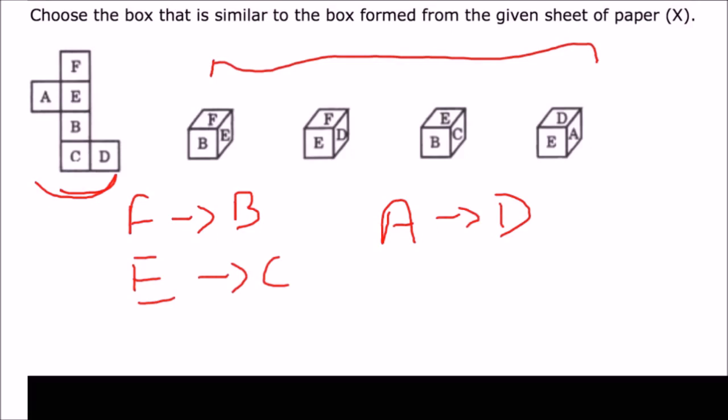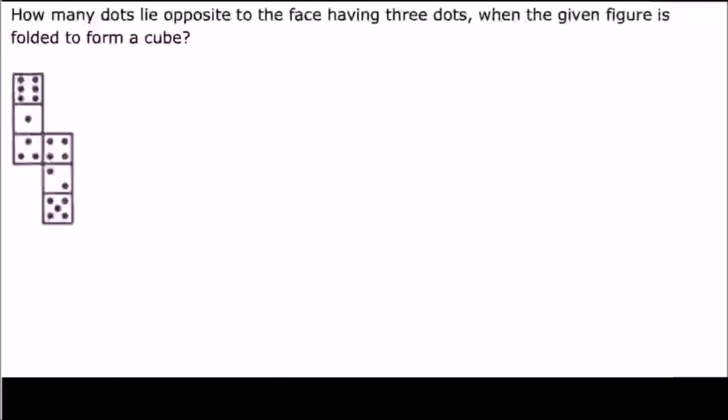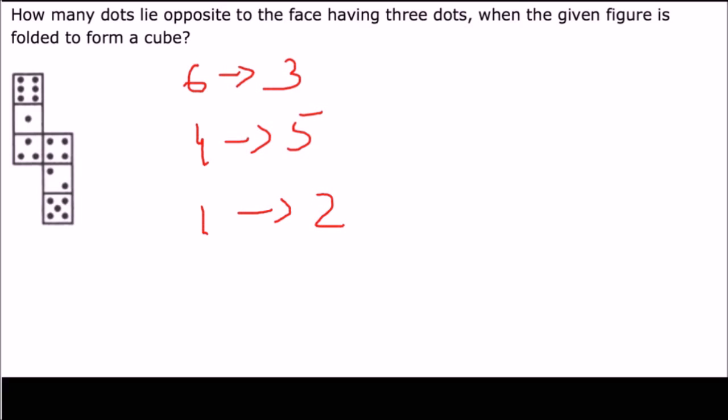Let me take one more example of this type. You are given an unfolded paper and asked to find the face opposite to the face containing three dots. Using the same trick: opposite to 6 is 3, opposite to 4 is 5, and the remaining — opposite to 1 is 2. Since you need the face opposite to 6, the answer is 3. So this was it for this video. I hope you really liked this trick — do hit the like button if you liked it, and subscribe to our channel Teammust as more aptitude videos are coming. Till then, be blessed and keep rocking, bye bye!